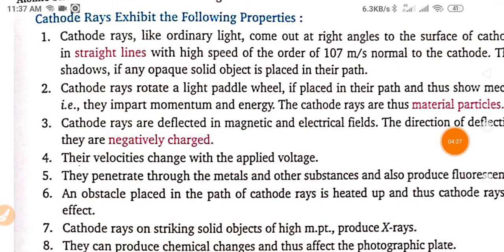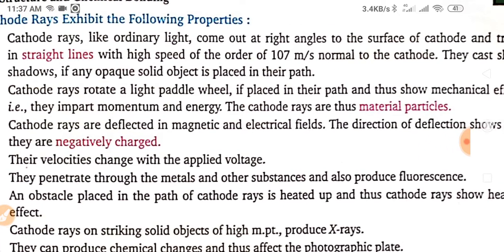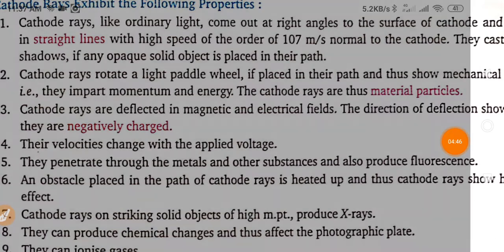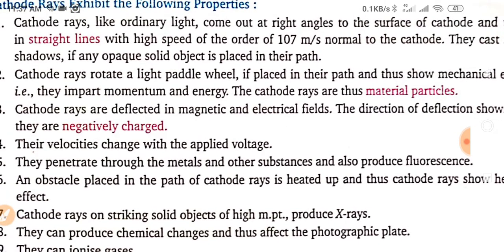There are some characteristics of cathode rays. They exhibit: cathode rays like ordinary light come out at right angles to the surface of cathode and travel in straight lines with high speed of the order 10^7 meter per second normal to the cathode. They cast sharp shadows if any opaque solid object is placed in their path. You can see they always are in a parallel line or a straight line. And they show a shadow whenever you place any opaque in their path.